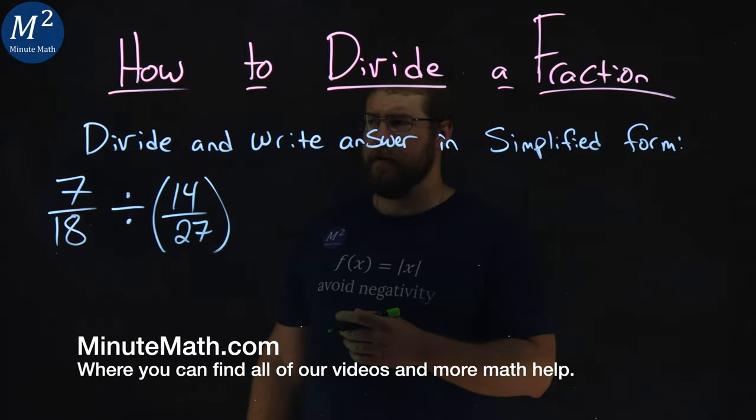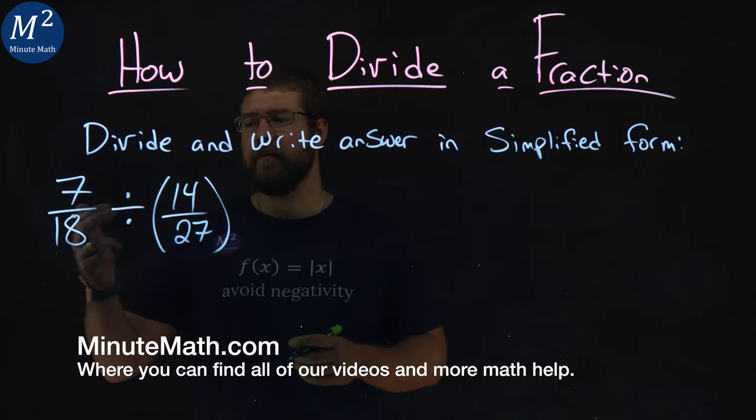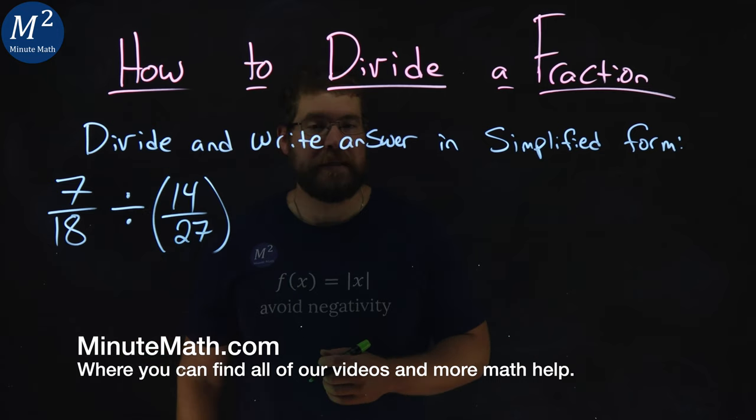We're given this problem right here. Divide and write answer in simplified form of 7 18ths divided by 14 over 27.